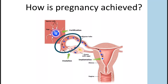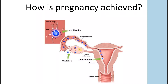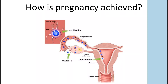The egg will then travel down the fallopian tube. Intercourse should hopefully happen around the same time, and the sperm makes its way through the vagina, cervix, and uterus — and the egg and sperm actually meet in the tube. One sperm will be the lucky sperm that fertilizes the egg, and now we have an embryo. The embryo will then travel the remainder of the distance down the tube and implant in the uterus.